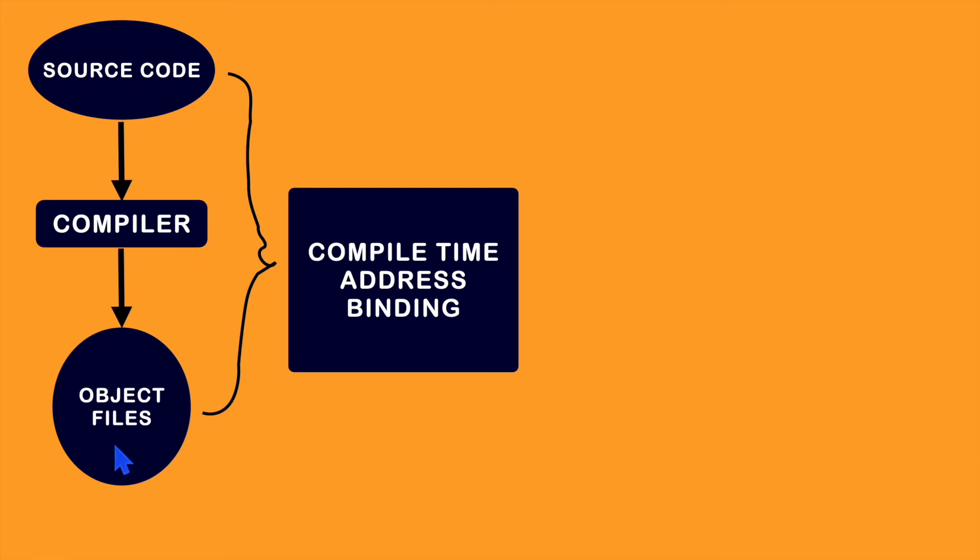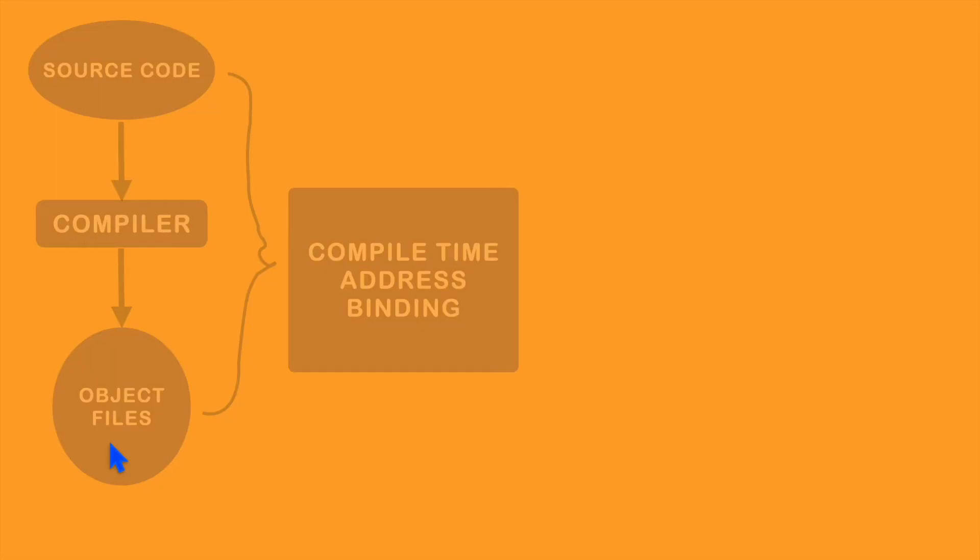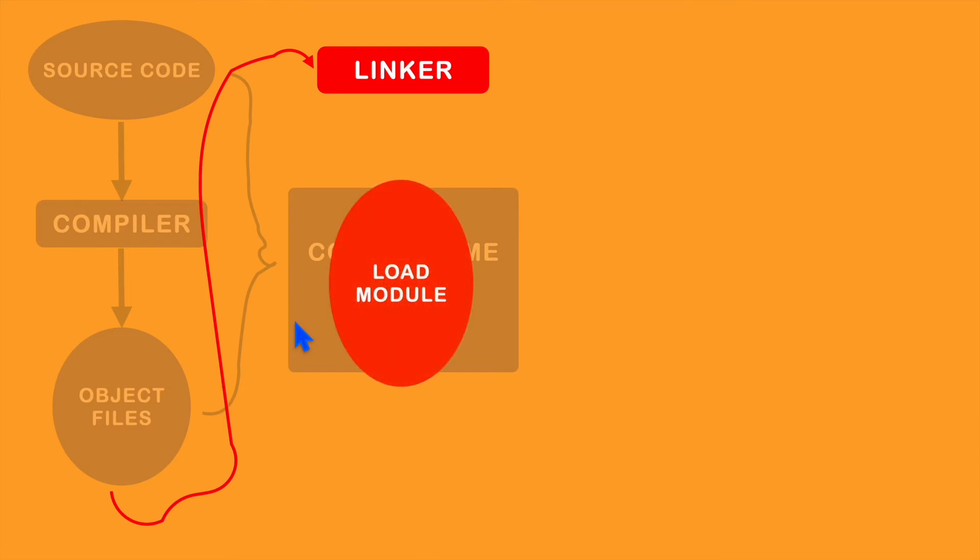Next, these object files need to be linked. For that, the linker takes these object files and generates a loadable module, and this loadable module needs to be loaded into the main memory or RAM memory.